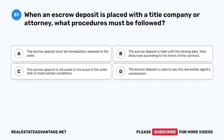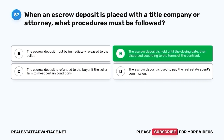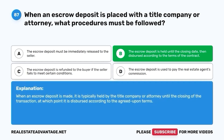Question 87. When an escrow deposit is placed with a title company or attorney, what procedures must be followed? A. The escrow deposit must be immediately released to the seller. B. The escrow deposit is held until the closing date, then dispersed according to the terms of the contract. The correct answer is B. When an escrow deposit is made, it is typically held by the title company or attorney until the closing of the transaction, at which point it is dispersed according to the agreed-upon terms.